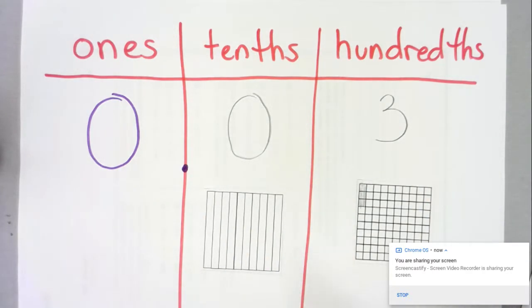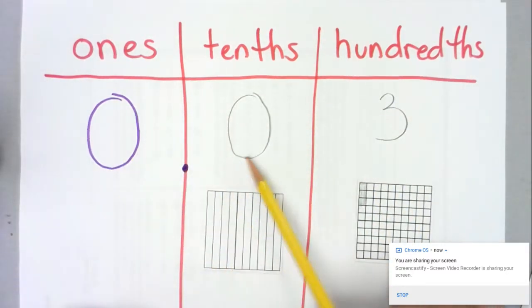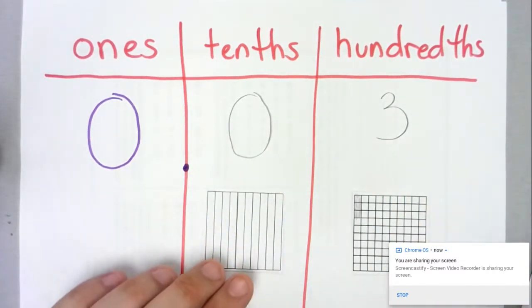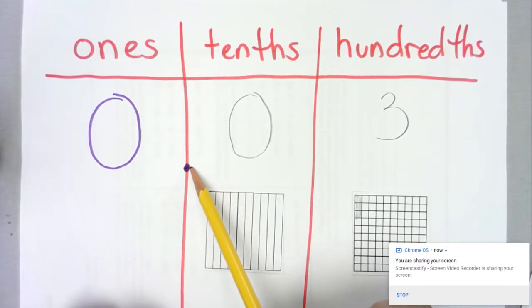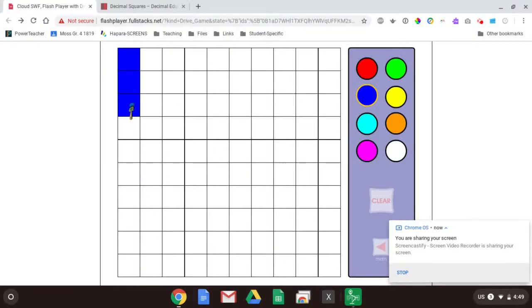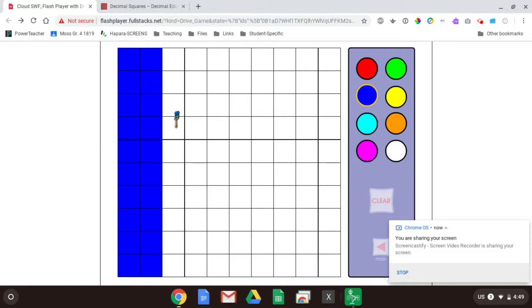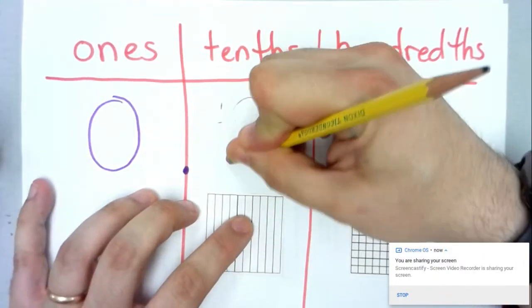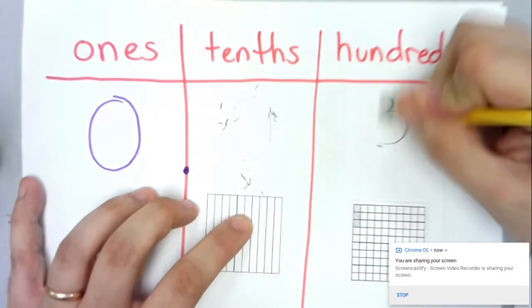That's 0.03, which I read as 'zero and three hundredths.' We talk a lot about how do you spell a decimal versus how do you read it — just like when I say how do you spell the word 'apple' I say A-P-P-L-E, but I don't say 'could you please bring me an A-P-P-L-E.' Likewise, I might write this decimal as 0.03, but I don't read it as 'zero point zero three' — I read this as 'zero and three hundredths.' I always say 'and' when I come to the decimal point.